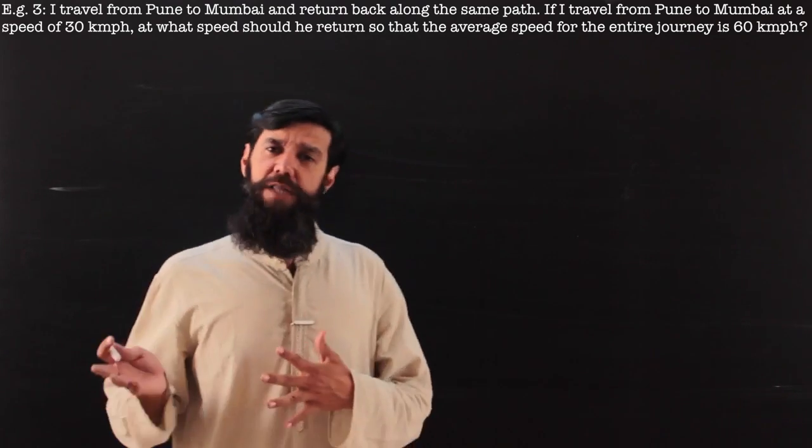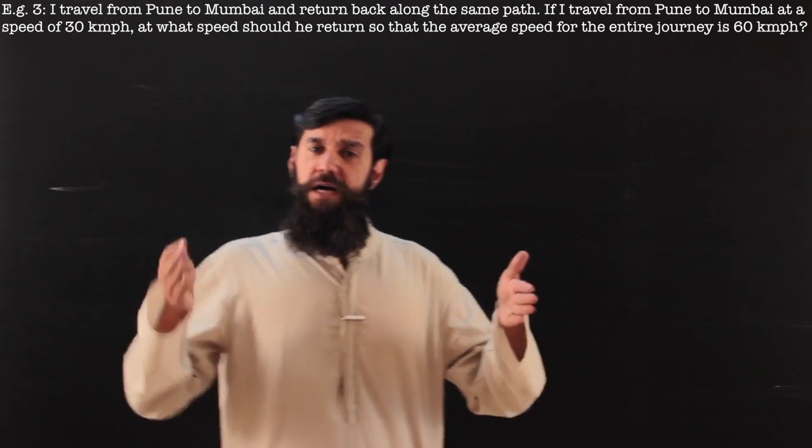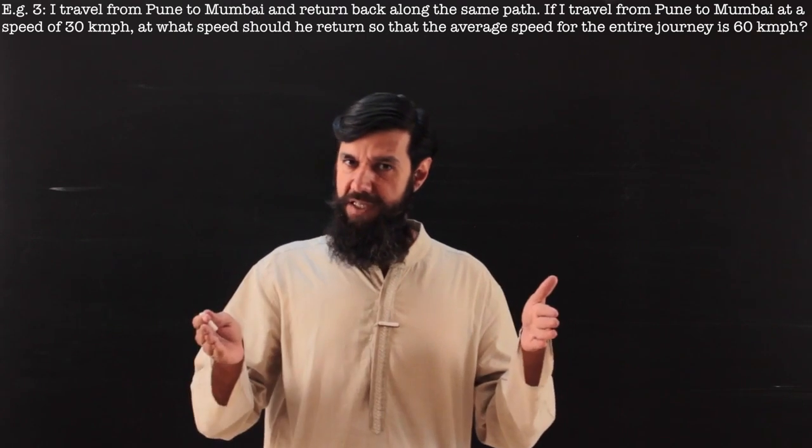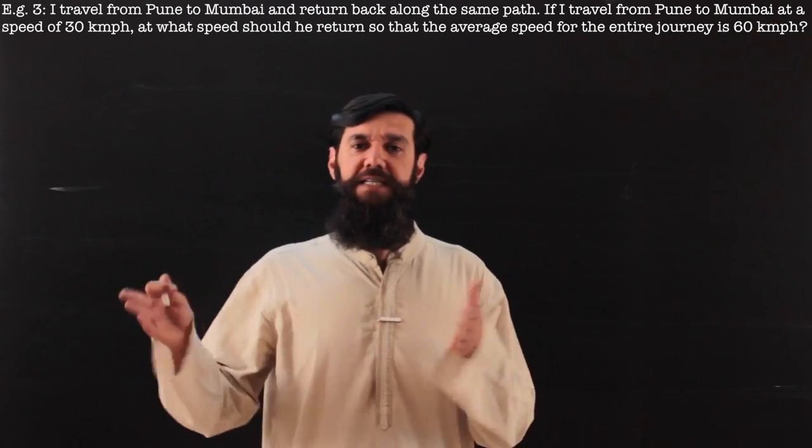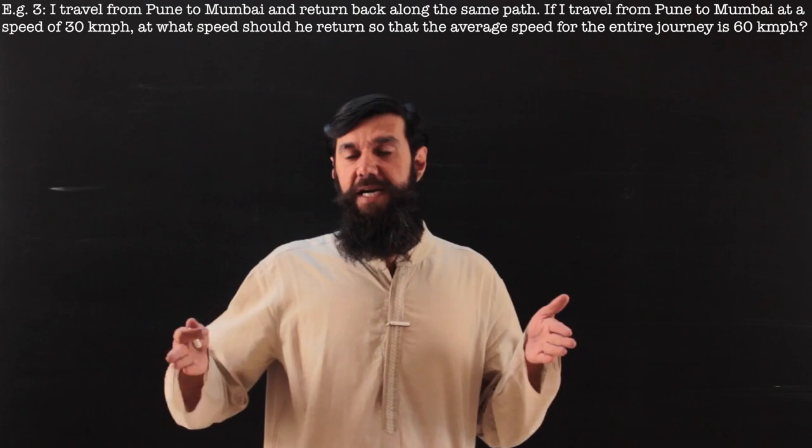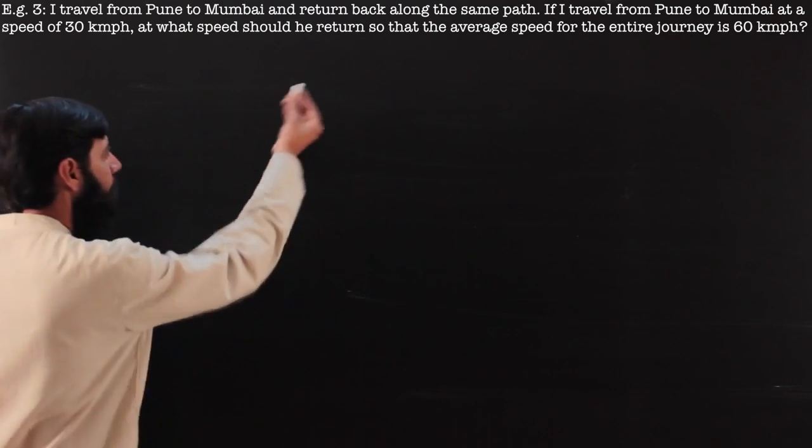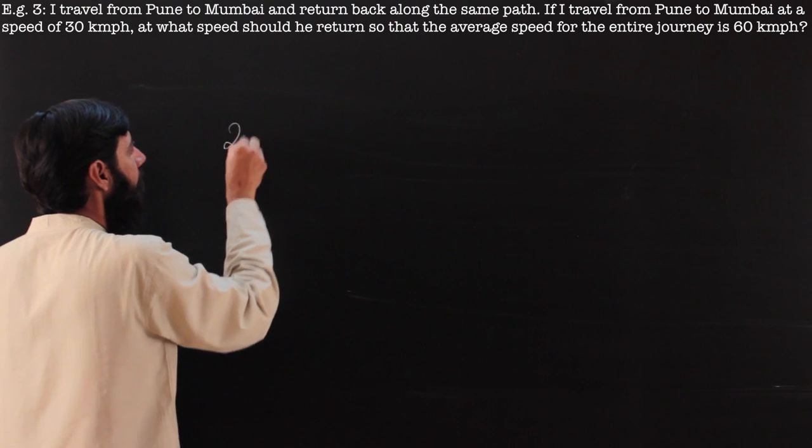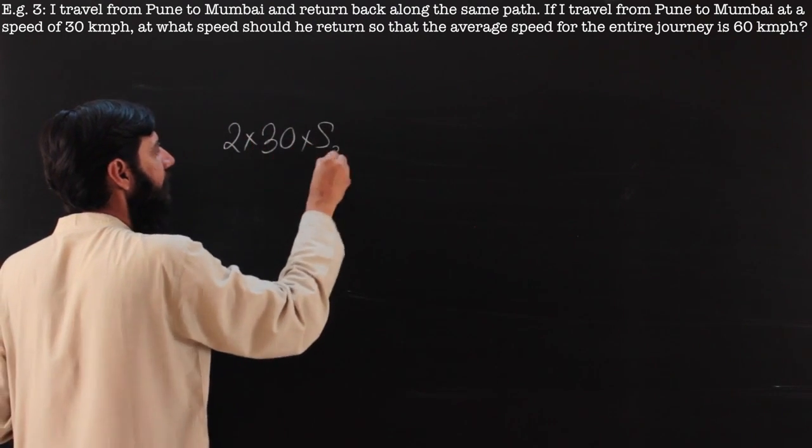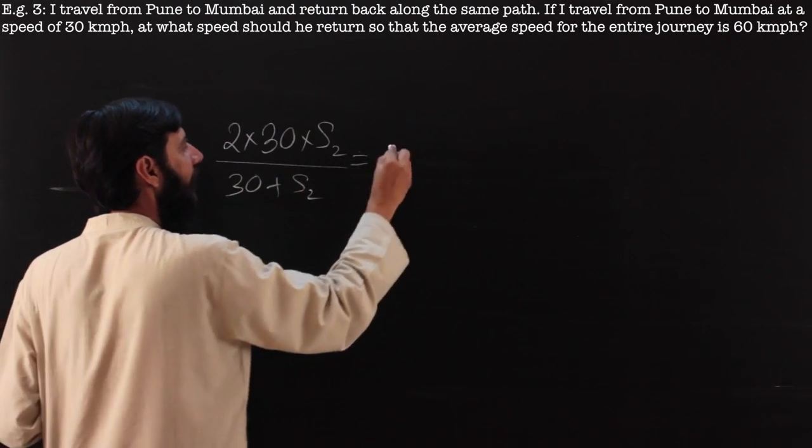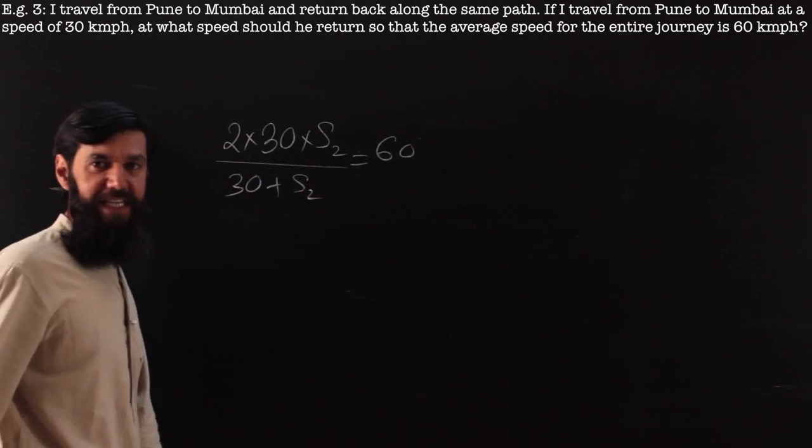Very similar to the example that we just did. Again, the two stretches are equal in distance because I am traveling along the same path. One speed is given as 30, the other speed return speed is asked, so that the average is 60. Let us reuse that formula. Two times one speed is 30, the other speed is s2, I do not know, s1 plus s2, and the average speed needs to be 60.